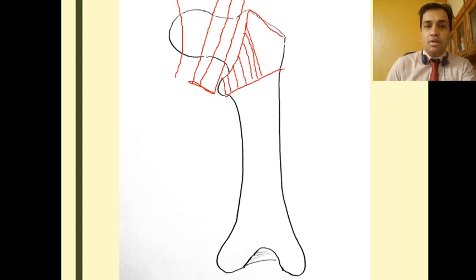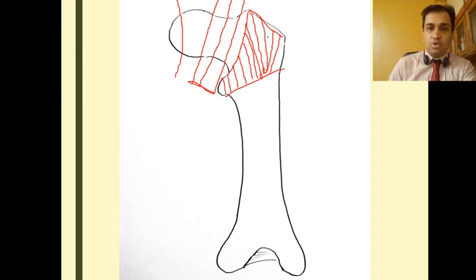This intertrochanteric fracture is also called an extracapsular fracture because the hematoma and the fracture line lie outside the hip joint capsule.